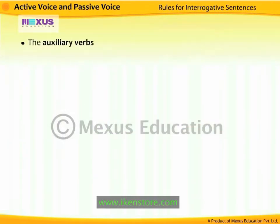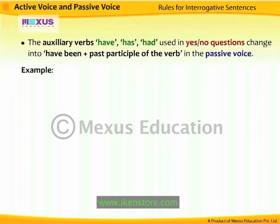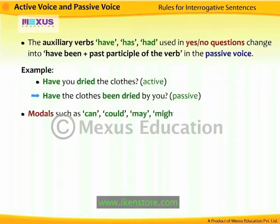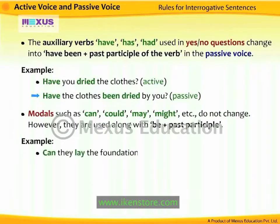The auxiliary verbs Have, Has, Had used in yes or no questions change into 'have been + past participle of the verb' in passive voice. For example, 'Have you dried the clothes?' becomes 'Have the clothes been dried by you?' Modals such as Can, Could, May, Might, etc. do not change; however, they are used along with 'be + past participle.' For example, 'Can they lay the foundation?' becomes 'Can the foundation be laid by them?'